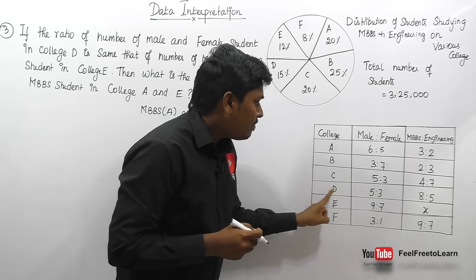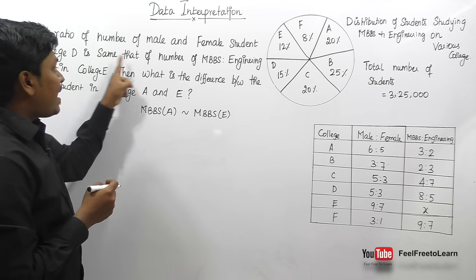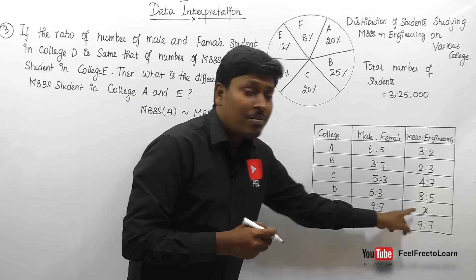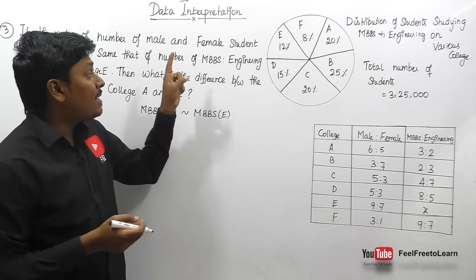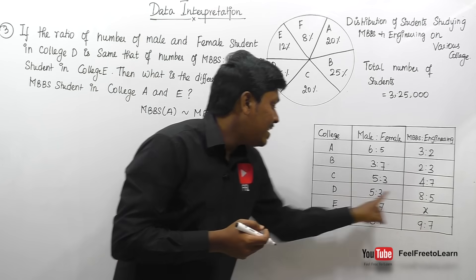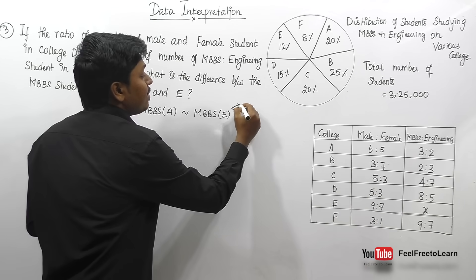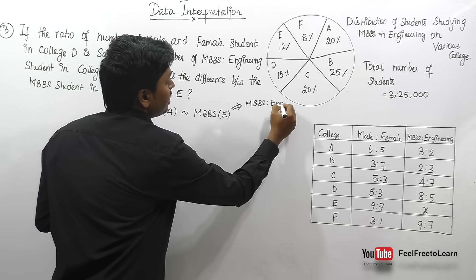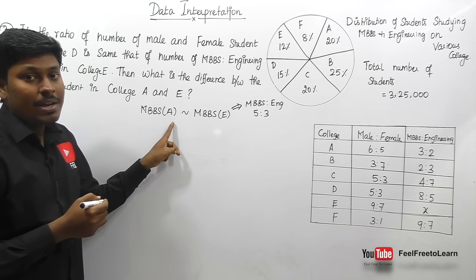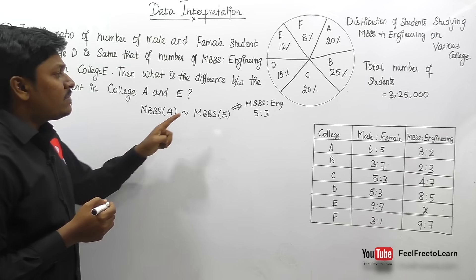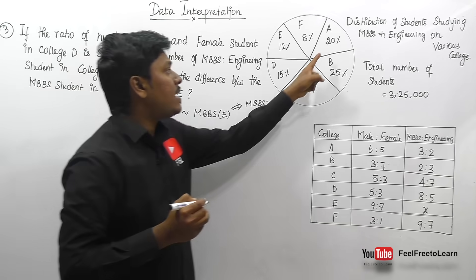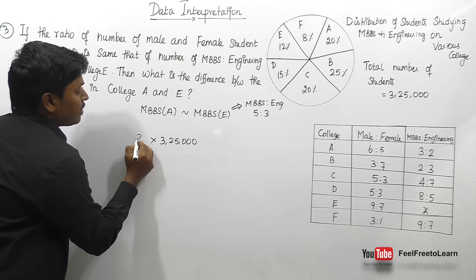College D's male-to-female ratio is 5:3. Since the question states this equals college E's MBBS-to-engineering ratio, college E's MBBS:engineering ratio is 5:3. We need to find the difference: MBBS students in college A minus MBBS students in college E. Total students are 3,25,000.